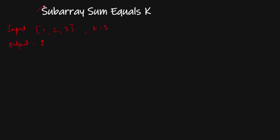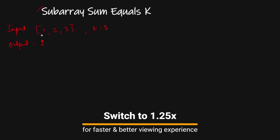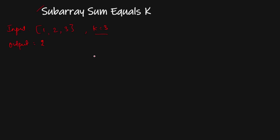Hello everyone, today we are going to solve the subarray sum equal k problem. We have an array and we have to find the total number of subarrays whose sum equals k. In this example, the array is [1, 2, 3] and k is 3. The subarrays [1,2] and [3] both have sum 3, so we return 2.